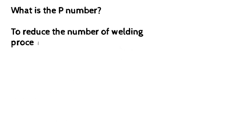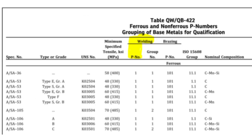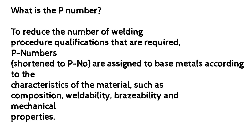What is the P number? To reduce the number of welding procedure qualifications required, P numbers (shortened to P no.) are assigned to base metals according to the characteristics of the material, such as composition, weldability, brazability and mechanical properties.